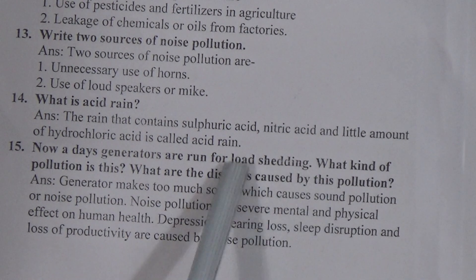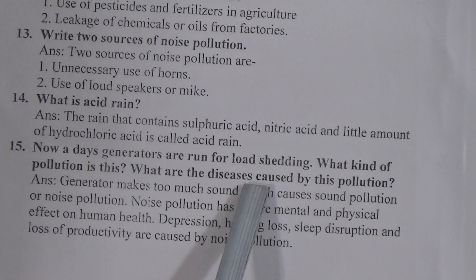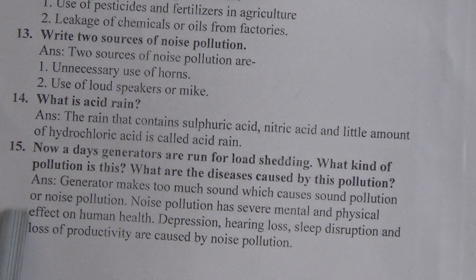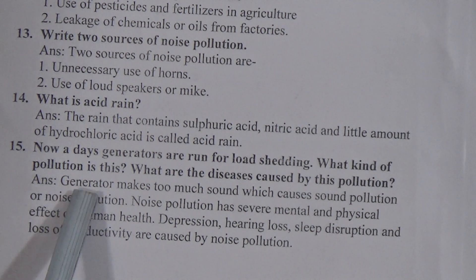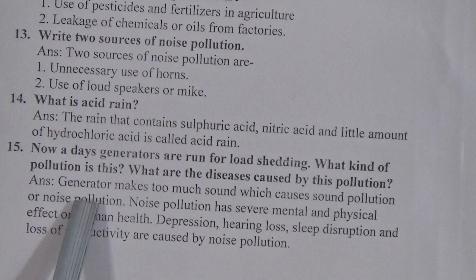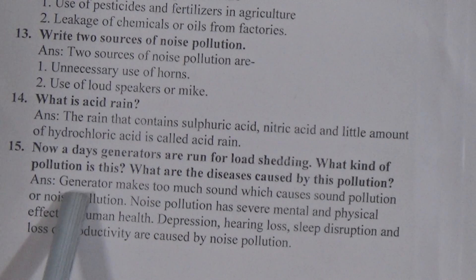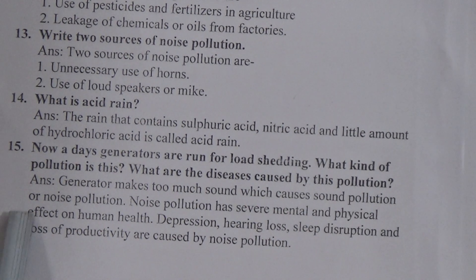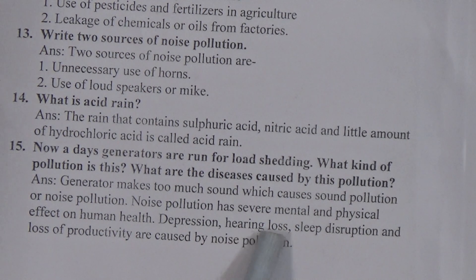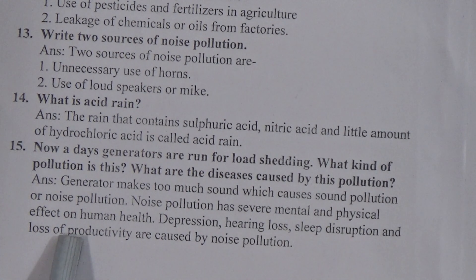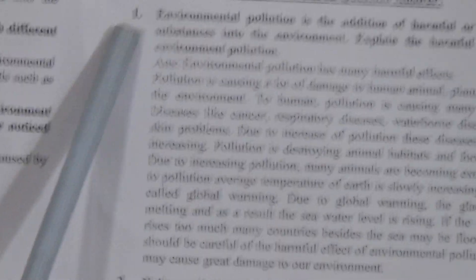Question 15: nowadays generators are run due to load shedding — what kind of pollution is this, and what are the diseases caused by this pollution? In the answer, we discuss noise pollution, but you can also write about air pollution because generators use fossil fuel which creates smoke that also pollutes the air. Generators make too much sound, which causes noise pollution. Noise pollution has severe mental and physical effects on human health — depression, hearing loss, sleep disruption, and loss of productivity are caused by noise pollution.